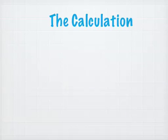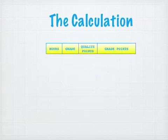How do we calculate our GPA? We need the number of credit hours, the grade, the quality points, and the grade points, which is calculated by multiplying the hours times the quality points. Let's see this done.